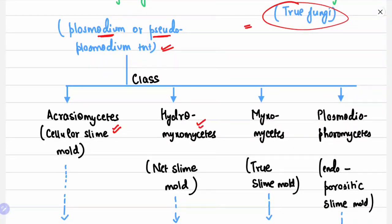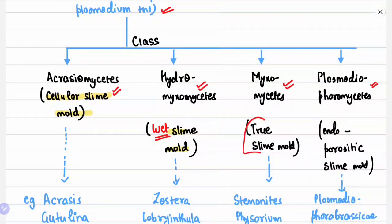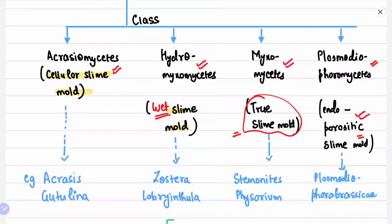The classes under Myxomycota are: first, Acrasiomycetes; second, Hyphochytriomycetes; third, Myxomycetes; and fourth, Plasmodiophoromycetes. Acrasiomycetes are also known as cellular slime molds. Hyphochytriomycetes are known as wet slime molds. Myxomycetes are called true slime molds.